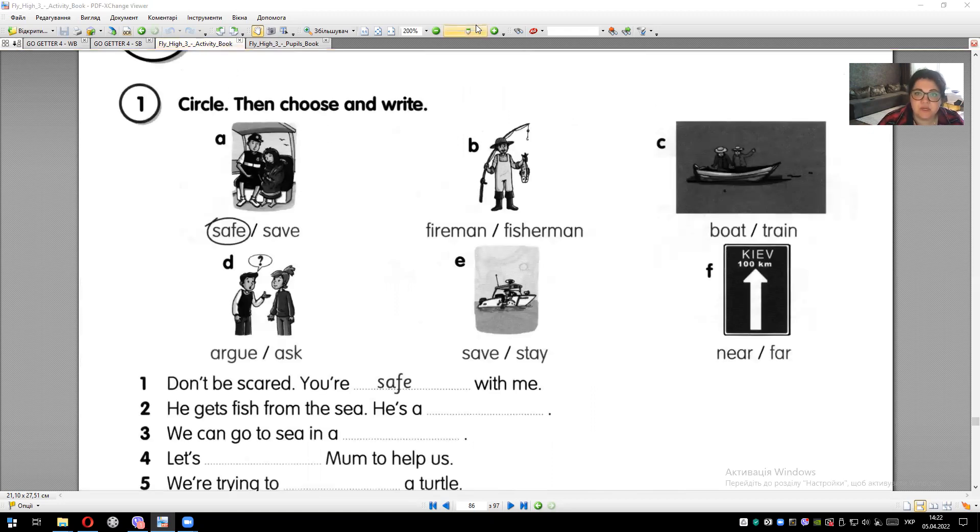Let's recall the meaning of words and circle what fits. So the first one: save or save. We know that safe means safe, secure. And save means to rescue. So here we have the word save underlined. Picture B.